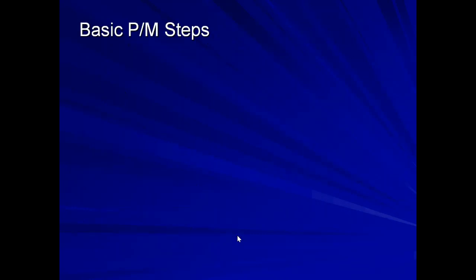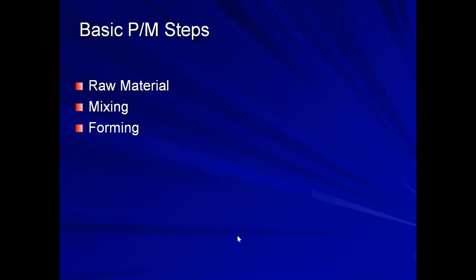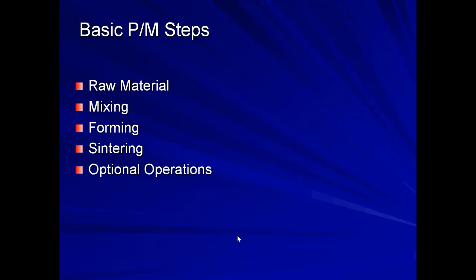Coming to the most important topic: the powder metallurgy steps, which are commonly asked in examinations. The steps are: first, production of powder metal (the raw material); second, mixing of the raw material; third, forming — giving the free-mixed material a shape using mechanical machines, presses, or dies; fourth, sintering — providing heat to convert the mechanical bond into a metallurgical bond; and finally, optional operations to achieve desirable properties in the product.